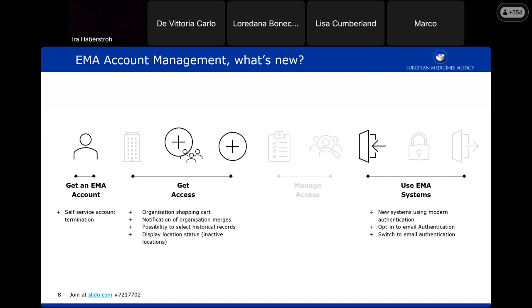The focus of this webinar is on what's new. Regarding the EMA account, the first feature introduced is self-service account termination — if you don't need your account anymore, you can terminate it. We also worked on making the integration with OMS more robust, adding an organization shopping cart, notifications of organization merges, the possibility to select historical records, and displaying the status of a location. We have more and more systems using modern authentication, and we have introduced email authentication, which is one of the big things happening in the next quarter.